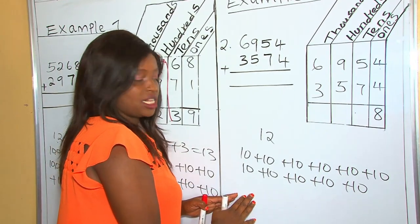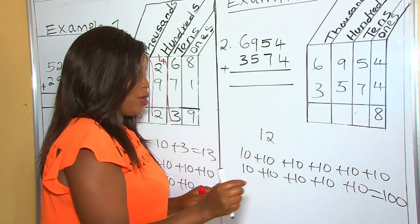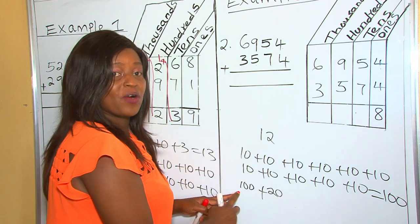So these are our 10 tens. When we add these 10 tens, they give us 100. Therefore, in 12 tens, we have 120.